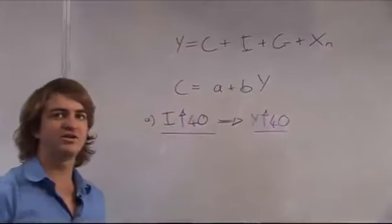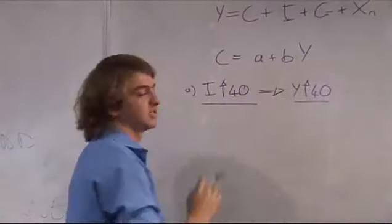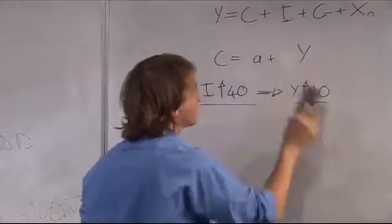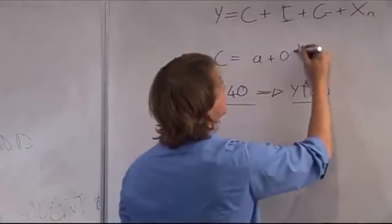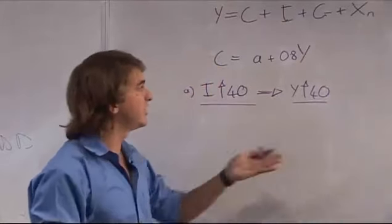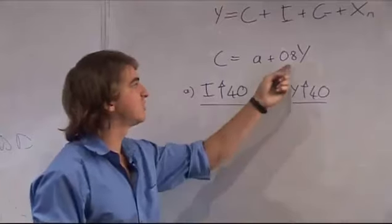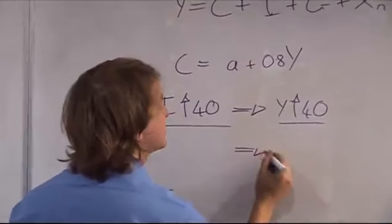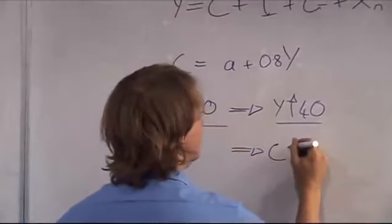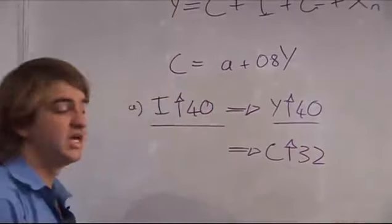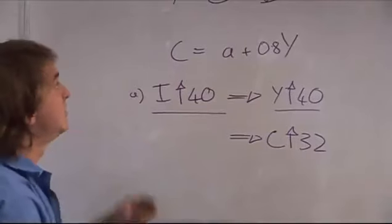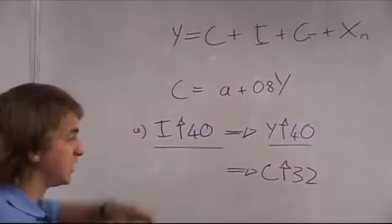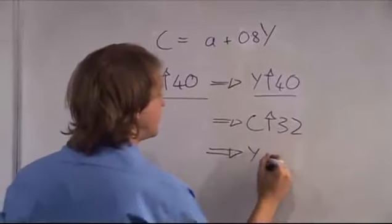But now, if Y increases by 40 units, C is going to increase. How much will C increase by? Let's say that b is equal to 0.8, so our marginal propensity to consume is 0.8. With every increase in income of one unit, we're going to increase consumption by 0.8. So if you increase income by 40 units, you increase consumption by 32 units. And if you increase consumption by 32 units, you're going to increase income by 32 units, because consumption is part of income.